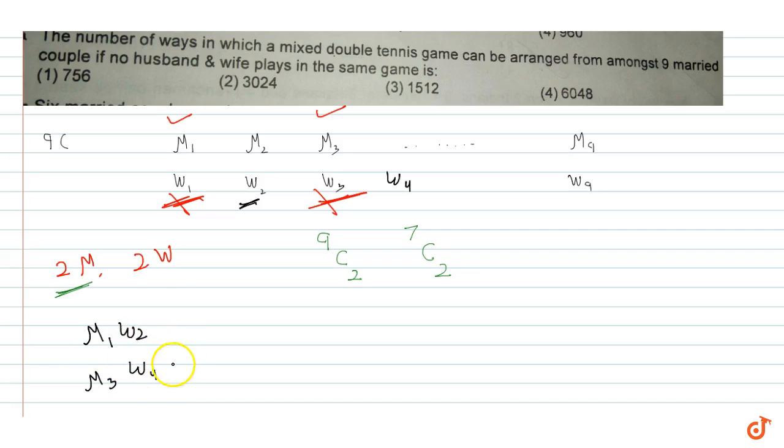But there's also another possible match when the teams interchange. For example, man one's partner could be woman four, and man three's partner could be woman two. These are possible combinations for mixed doubles. So we multiply by two, because we can arrange the partners in two ways.